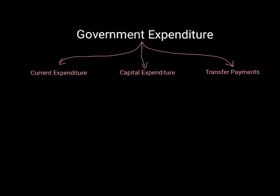In terms of how we refer to these different types of expenditure, there are basically three forms. We've got current expenditure, we've got capital expenditure, and we've got transfer payments. The impact of these is quite different, so it's important to understand what sorts of things each of them involve.